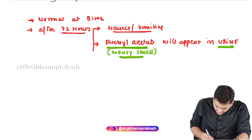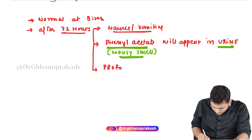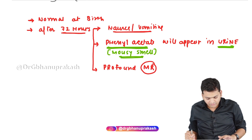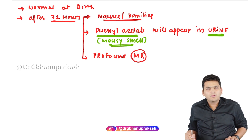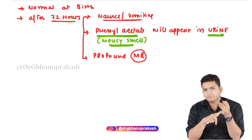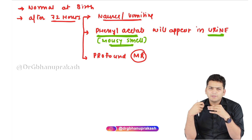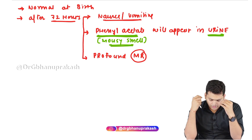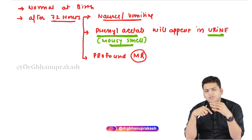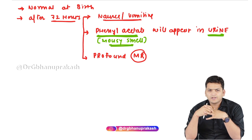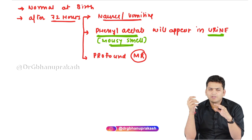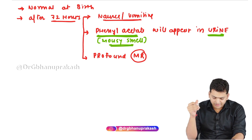If this continues, the child will develop profound mental retardation in the future. To summarize the clinical timeline: the child is normal at birth; from 72 hours onwards, nausea, vomiting, and lethargy appear; phenylacetate comes in the urine causing mousy odor; and ultimately the child may end up with profound mental retardation.